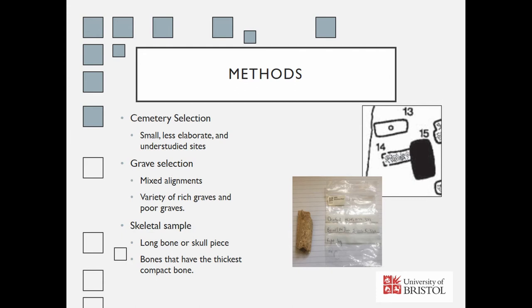Finding fragments for sampling was fairly easy at Apple Downs and Droxford, as they were buried in a more clay-like soil which helped with preservation. Pilgrim's Way, however, had a much more chalky soil, which turned the bone into a chalk-like material, effectively removing all the carbon and isotopes and making it difficult to sample.